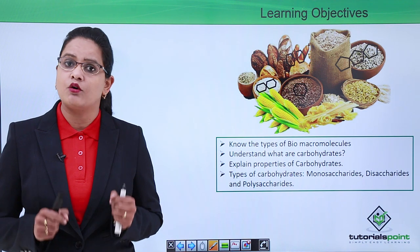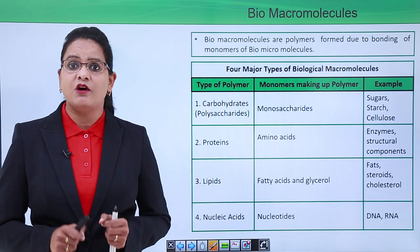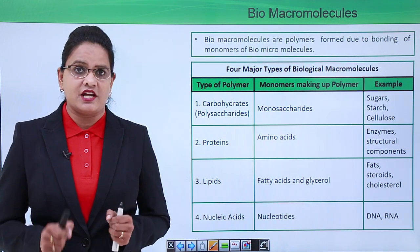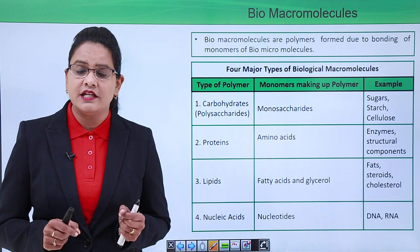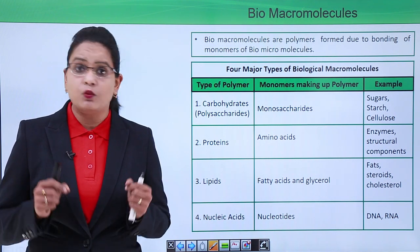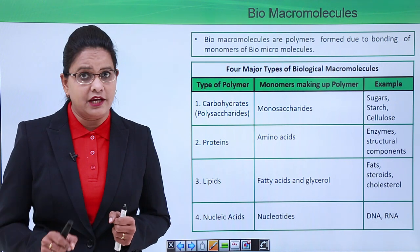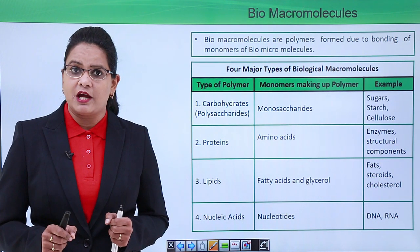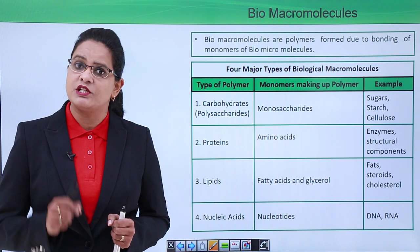First, biomacromolecules. Let us have a quick recap of biomacromolecules. We know that they are large-sized molecules, they are polymers which are obtained by bonding of monomers. And what are these monomers? These monomers are bio micro molecules. We learned that there are four major types of biomacromolecules.